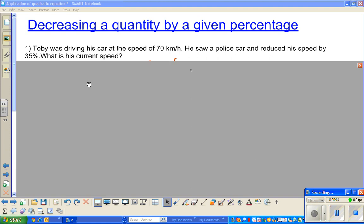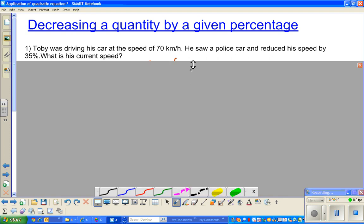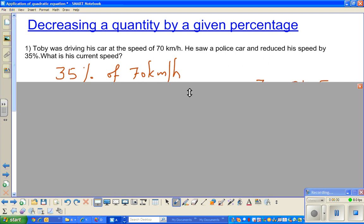In this video, I'm going to do probably two examples on decreasing by a given quantity. I've taken one simple example. Toby was driving his car at the speed of 70 km/h. He saw a police car and reduced his speed by 35%. What is his current speed? I've already done the working.